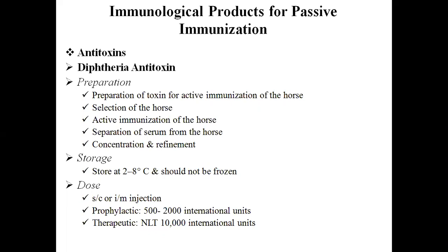Immunological products for passive immunization contain antibodies which produce passive immunity. These preparations are mainly used for treatment of diseases or for immediate prophylaxis. When a person or animal has been actively immunized, the blood contains a large number of antibodies. When blood is withdrawn and allowed to clot, the antibodies are found in the serum. The serum is called antitoxin if it contains antitoxin antibodies, antiserum if it contains antibacterial antibodies, and antiviral serum if the antibodies are antiviral.